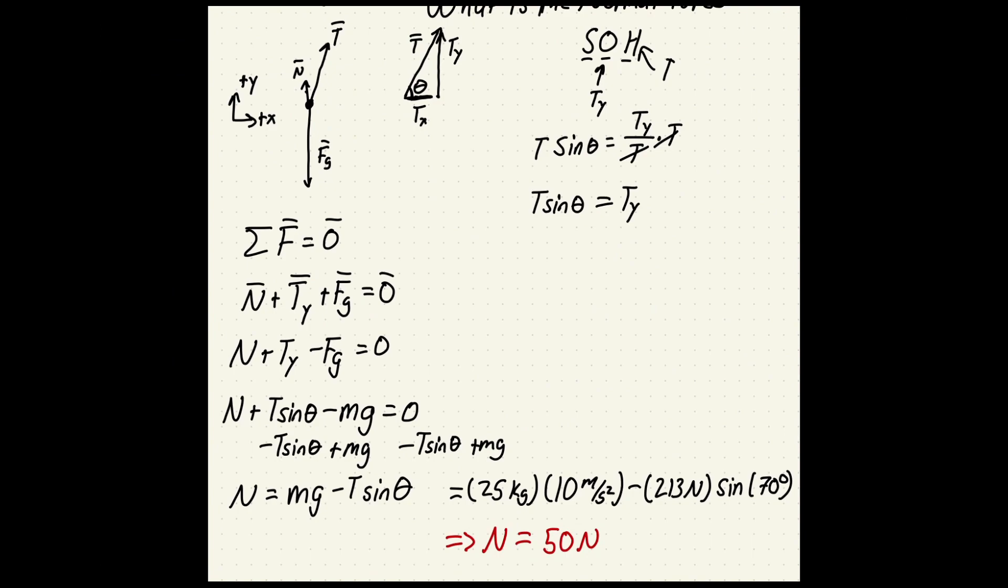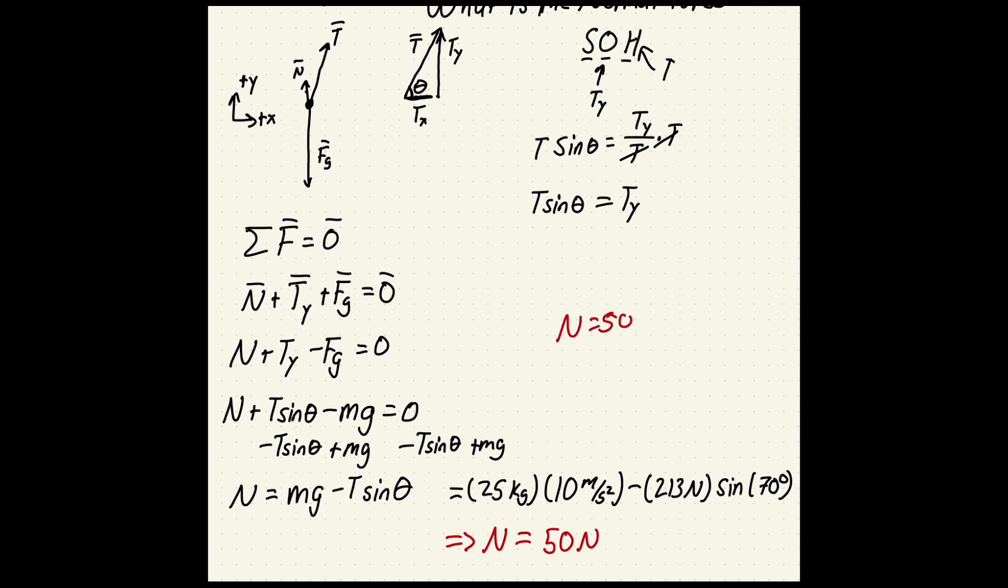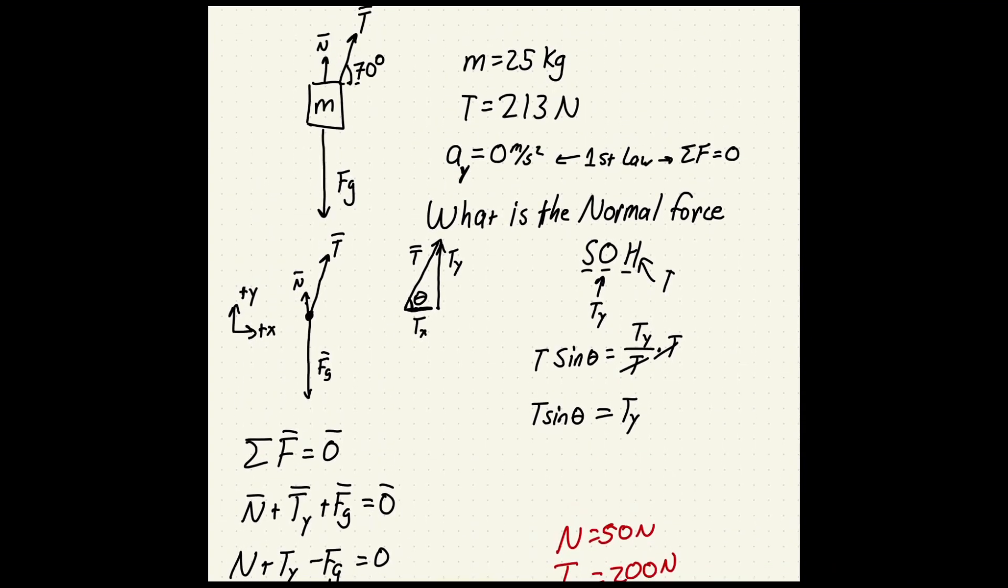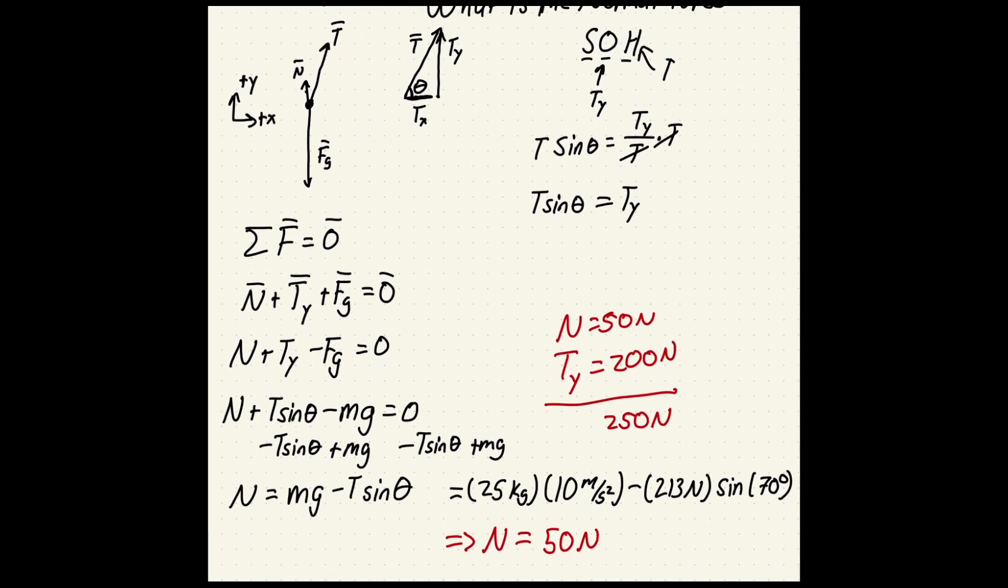And it tells us that if normal force is 50 Newtons and we know what our tension force is, 213 times sine 70 degrees, you can see that that's somewhere really close to around 200 Newtons. And so our answer for gravity if we were to try to find that is just the 200 plus 50, 250 Newtons. If we look up we see 25 kilograms for our mass times 10 meters per second squared that's 250, and so we have balanced forces. Everything is great and our answer is 50 Newtons. All right we'll see you in the next one.